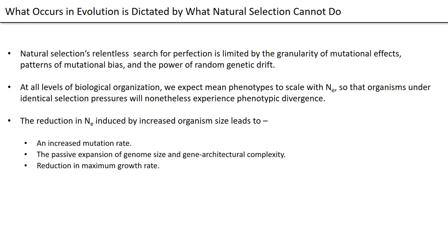Summing up: what occurs in evolution is dictated by what natural selection cannot do. Natural selection's relentless search for perfection is limited by the granularity of mutational effects, patterns of mutational bias, and the power of random genetic drift. At all levels of biological organization, we expect mean phenotypes to scale with NE so that organisms under identical selection pressures will nonetheless experience phenotypic divergence. The reduction in NE induced by increased organism size leads to an increased mutation rate, passive expansion of genome size and gene architectural complexity, and a reduction in maximum growth rate.